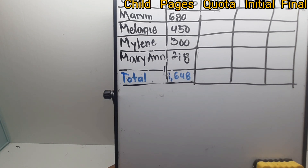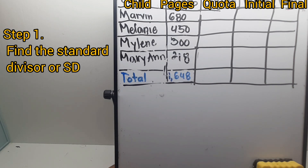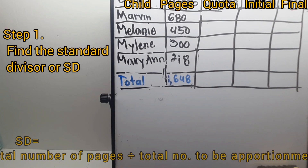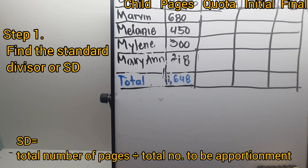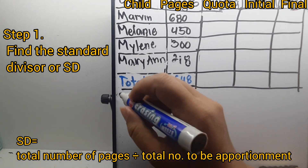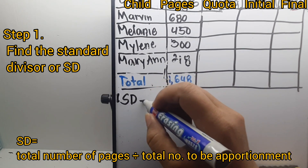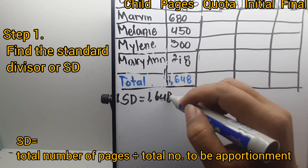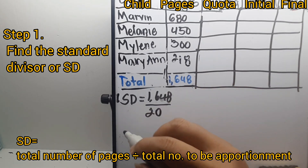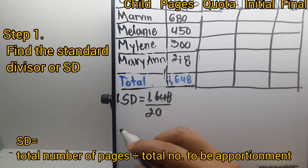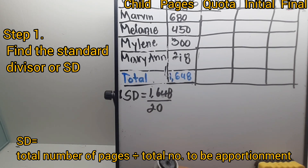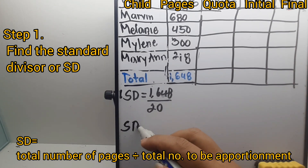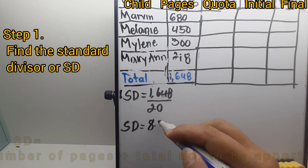Step one is to find the standard divisor (SD), which equals the total pages divided by the total apportionment of candy. You can pause the video if you want to try it yourself, then play again to check your answer. SD is equal to 82.4.